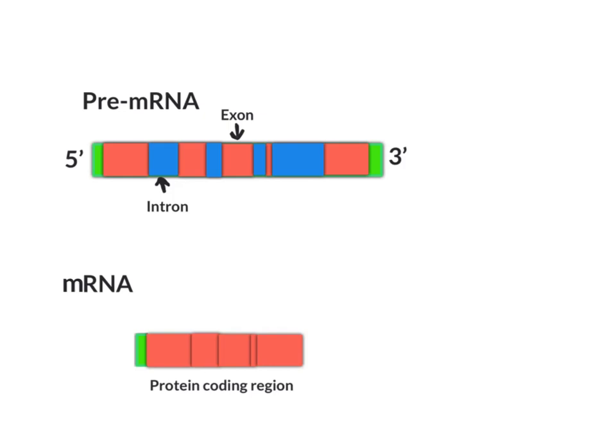The removal of these introns, or the splicing that occurs to put these exons together, also allows for the diversity that we see within mRNA. This allows for different proteins to be made, a topic for another video.